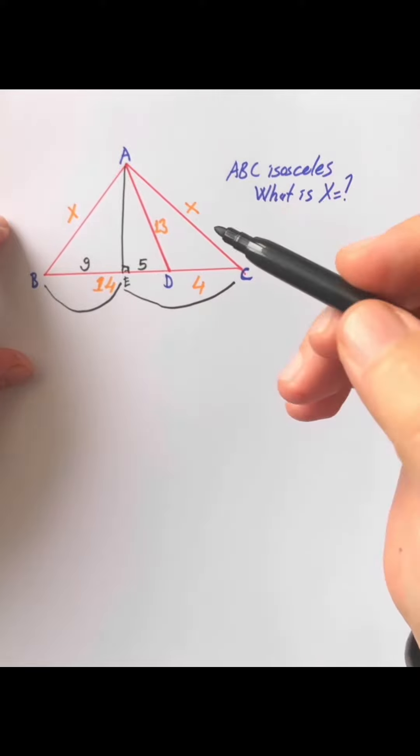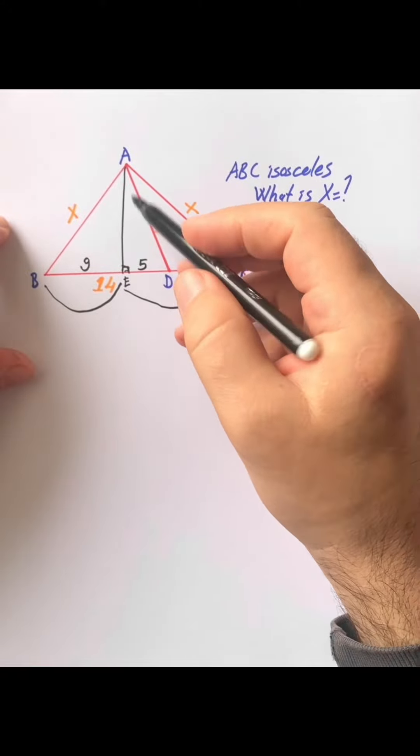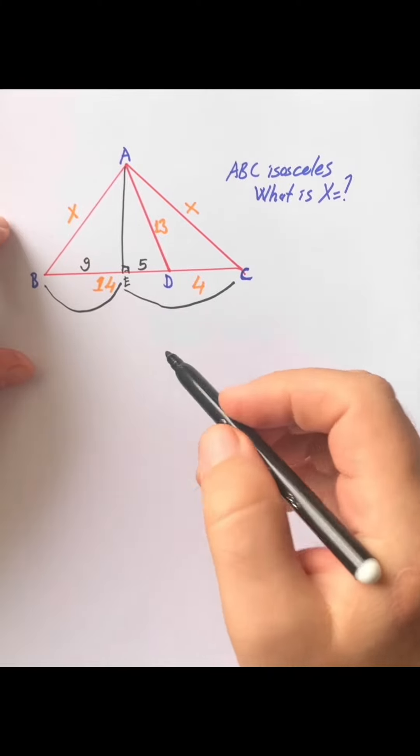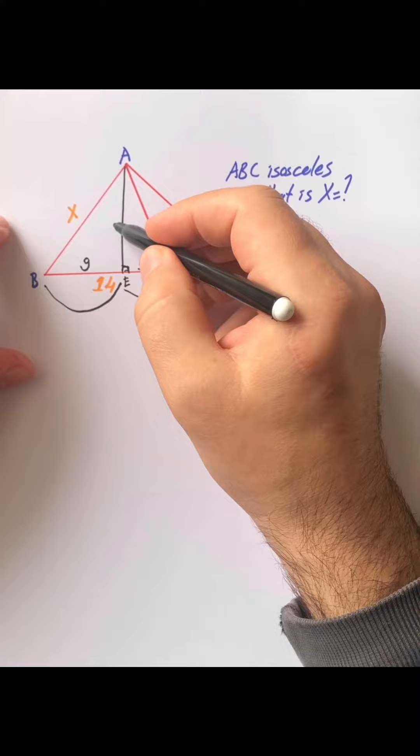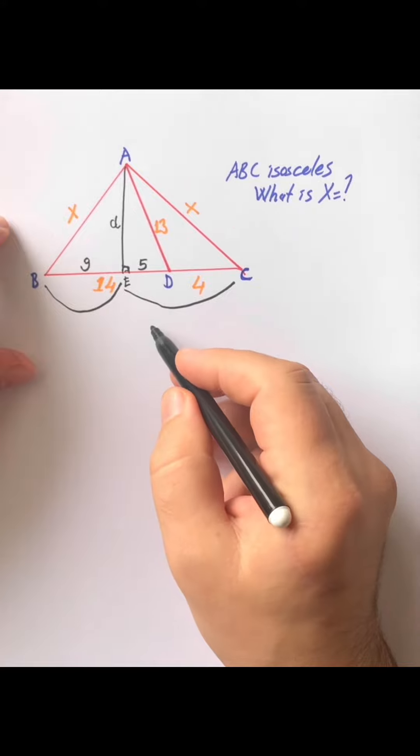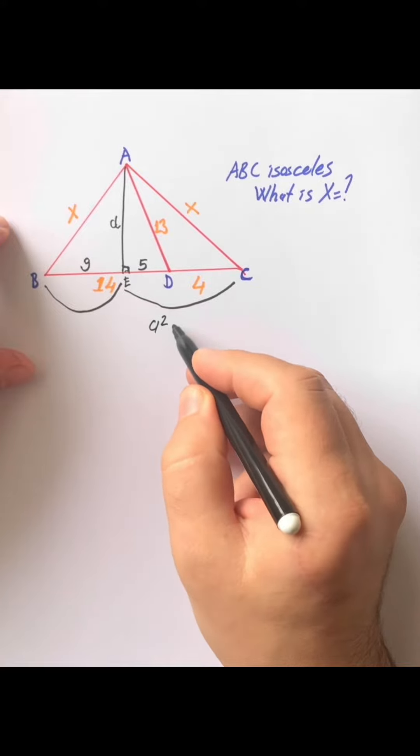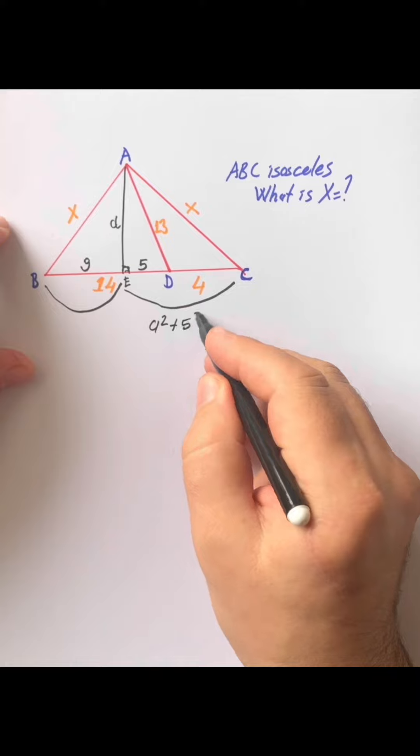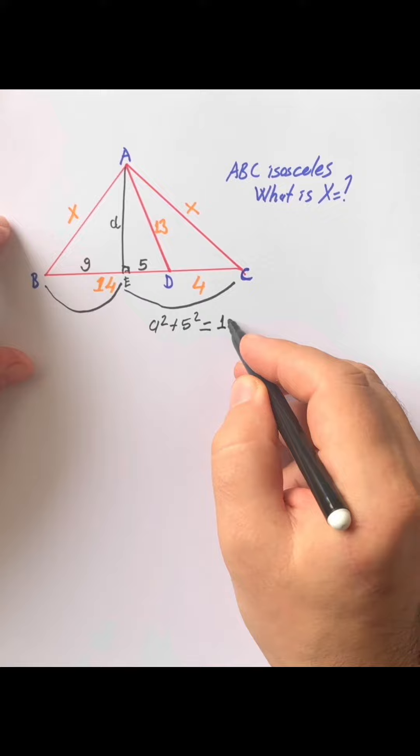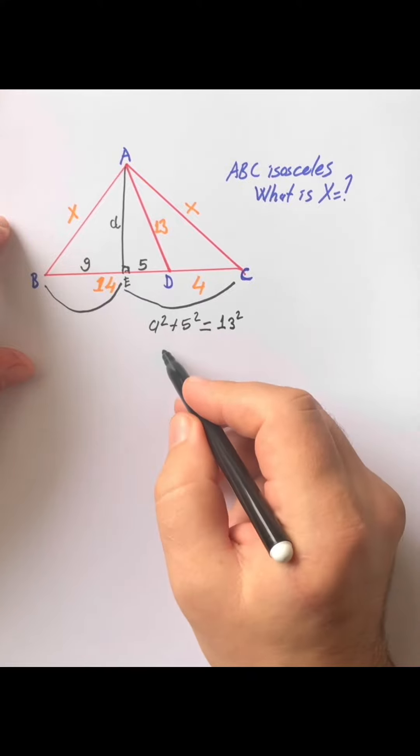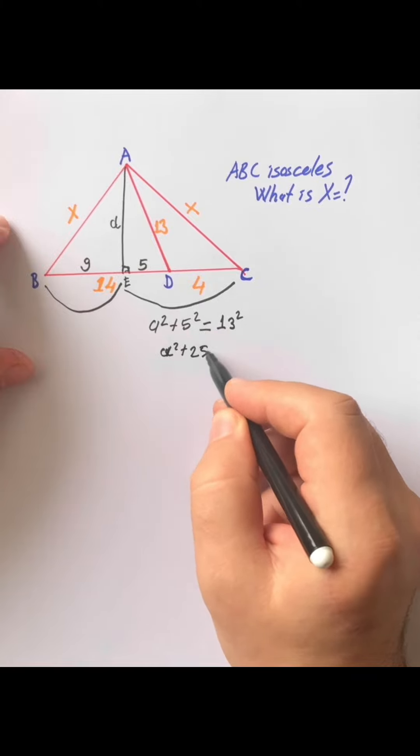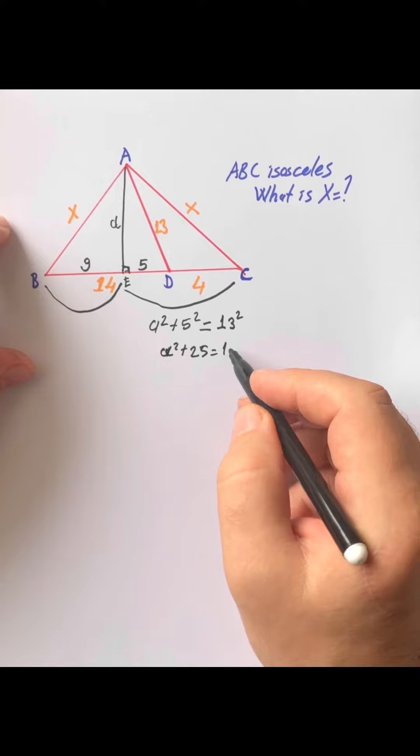If we use Pythagorean theorem in AED triangle, I am going to call here A units. A squared plus five squared equals thirteen squared. A squared plus twenty-five equals one hundred sixty-nine.